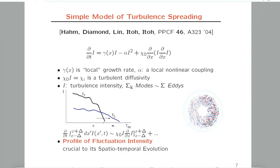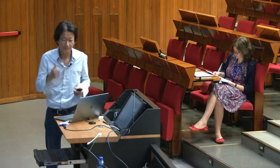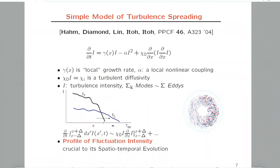If you keep only this term—linear growth and nonlinear damping going like I squared—then radial diffusion of fluctuation itself will appear as a nonlinear diffusion of the fluctuation itself. If you look at this equation, this gradient of fluctuation will play a crucial role in the spatial-temporal evolution of the fluctuation envelope.